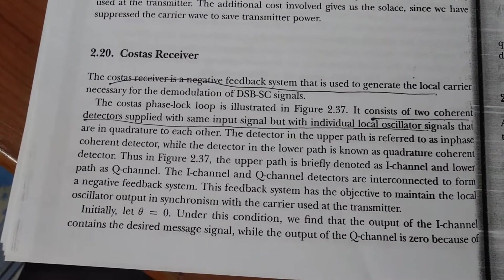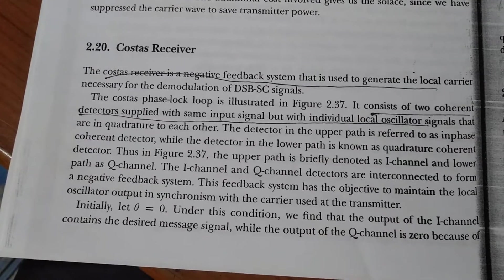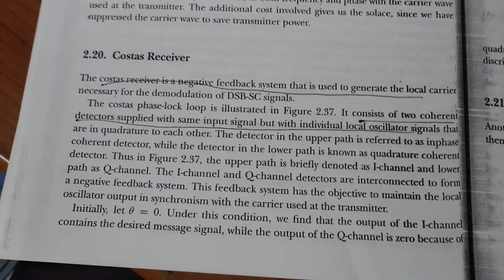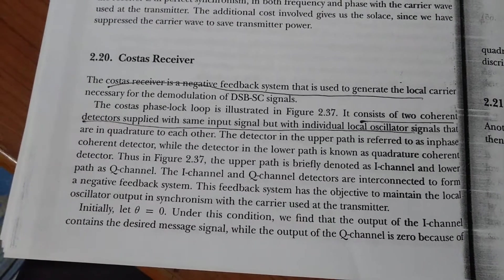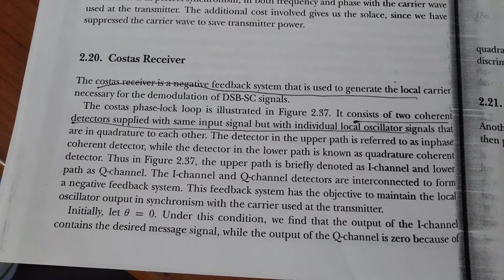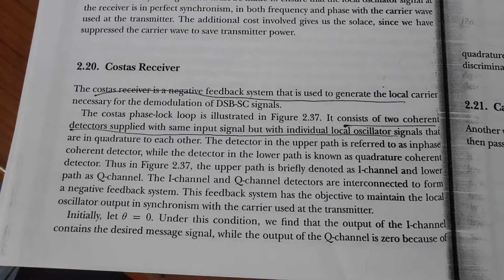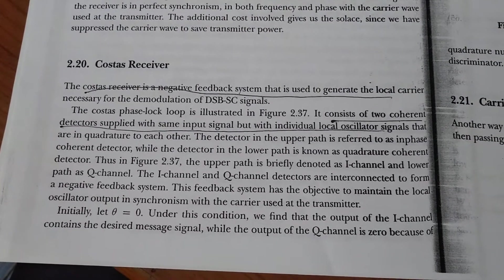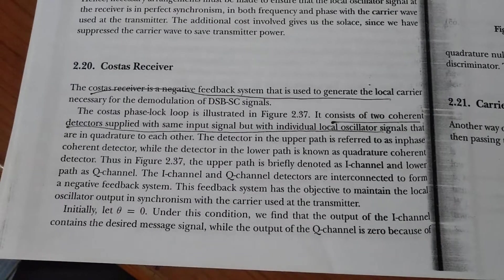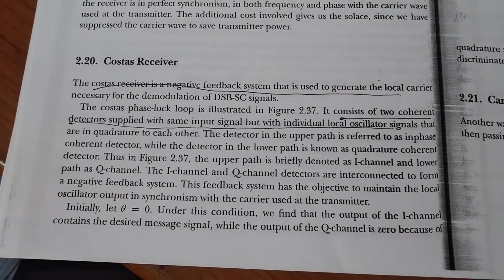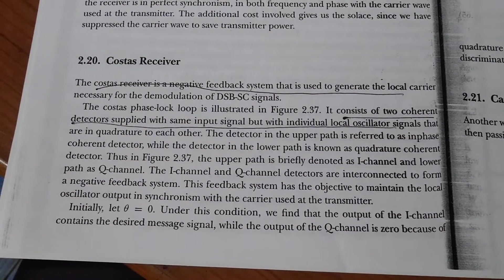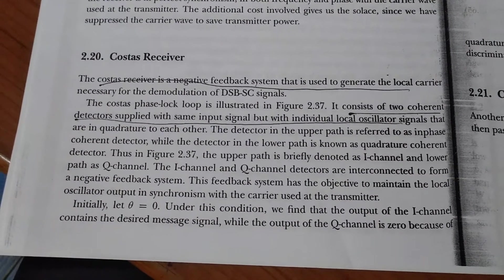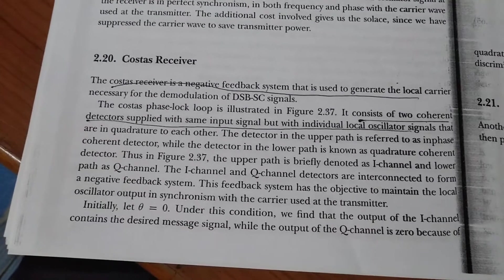The Costa receiver is a negative feedback system used to generate the local carrier necessary for the demodulation of DSB-AC signals. The Costas phase-locked loop is illustrated in figure 2.37. It consists of two coherent detectors supplied with the same input signal, but with individual local oscillator signals that are in quadrature to each other.